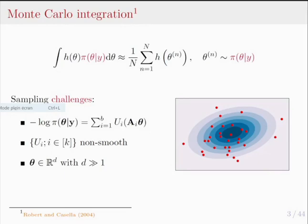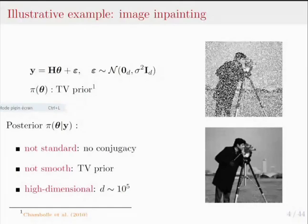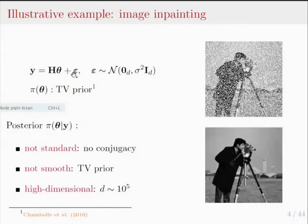This is the challenge I want to tackle in this talk. As an illustrative example in image processing, consider image inpainting, where you want to solve a linear inverse problem. You have an original image theta damaged by a binary mask H with added Gaussian noise, giving a noisy observation Y depicted at the top right of the slide. We specify a prior distribution based on the total variation function, commonly used in image processing, to smooth the image.